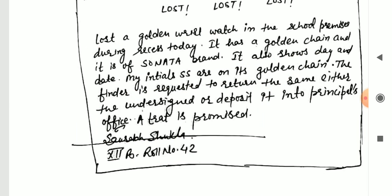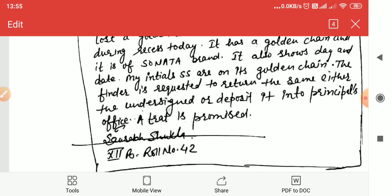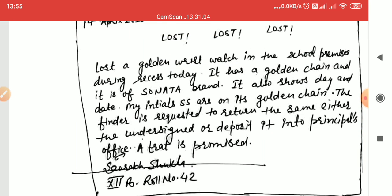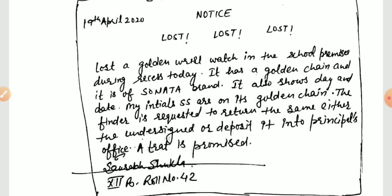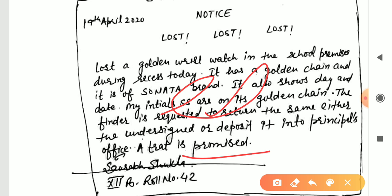For a 'Found' notice, suppose you have found a wallet in the school premises during recess today. Mention the physical description: it is brown and of the Adidas company. It also contains some ATM cards and important receipts and documents, but do not mention how much cash is inside. The real owner should describe the cash amount and what is inside, and they can collect it from the principal's office. Instead of 'promised,' you can write 'a treat is expected.'